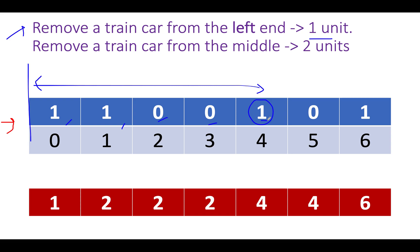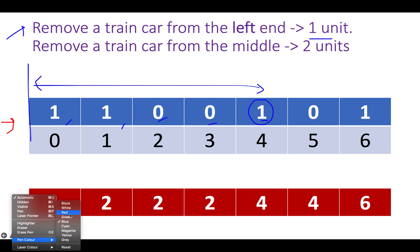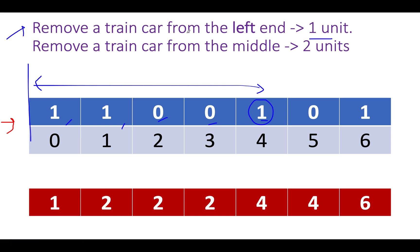We take this decision irrespective of whether the previous cars were illegal or legal. In a brute force way we simply remove all cars starting from the left end up to the i-th index. The other possibility is the second approach — remove a car from the middle.